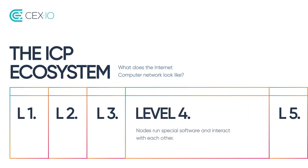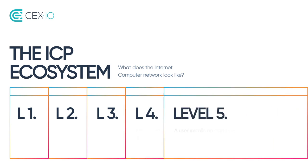Level 4: Nodes run special software and interact with each other. Level 5: A user installs an app built on ICP and gains access to data using a single key.